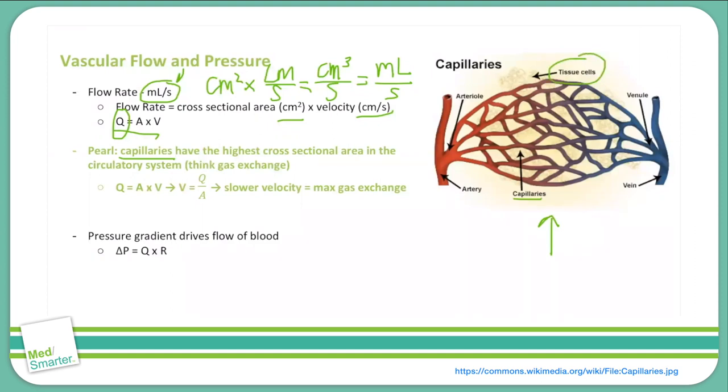Now what does that increased cross-sectional area in the capillary system have to do with the flow rate? Again, a moment ago we mentioned that the way we calculate flow rate is Q equals AV. The flow rate is equal to the cross-sectional area times the velocity of blood through the blood vessel. So if we rewrite that, we can write it as V equals Q over A. Or the velocity of blood through the blood vessel is equal to the flow divided by the cross-sectional area.